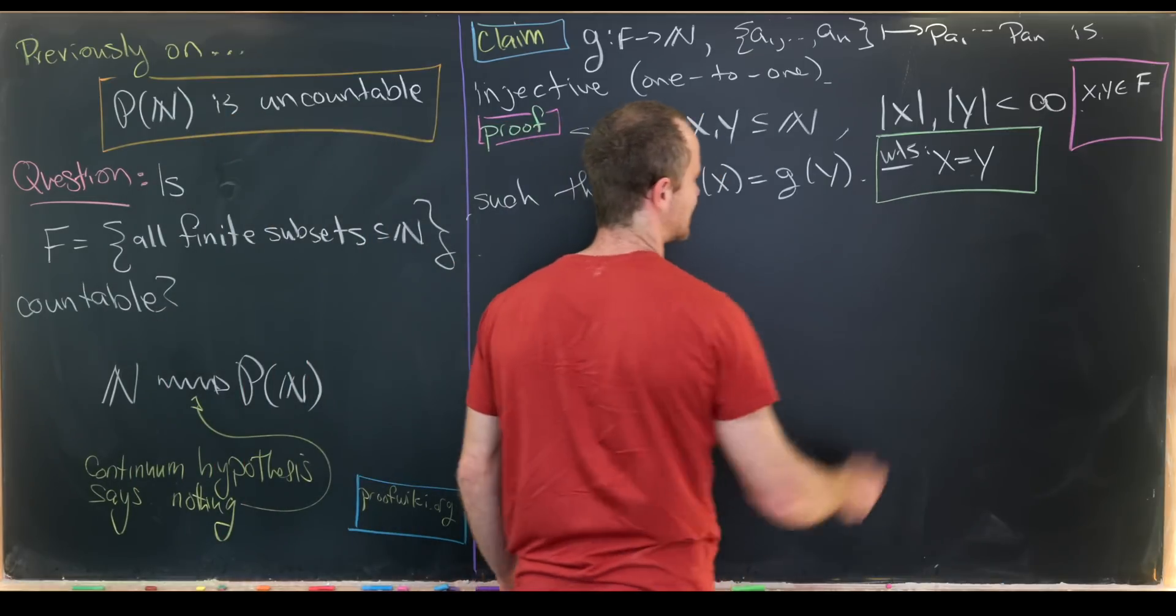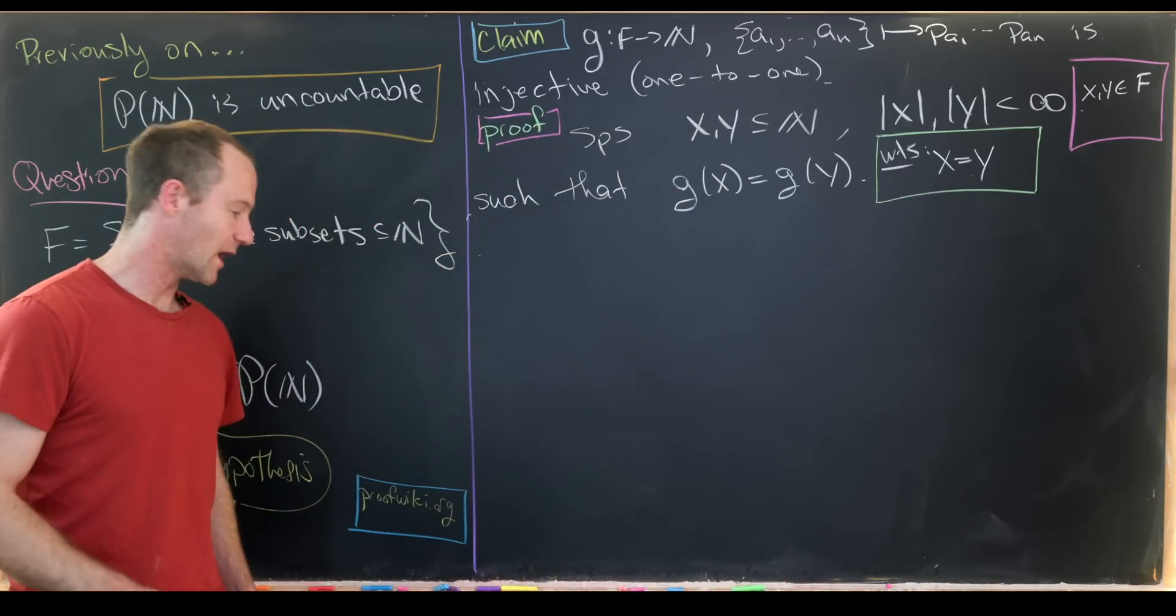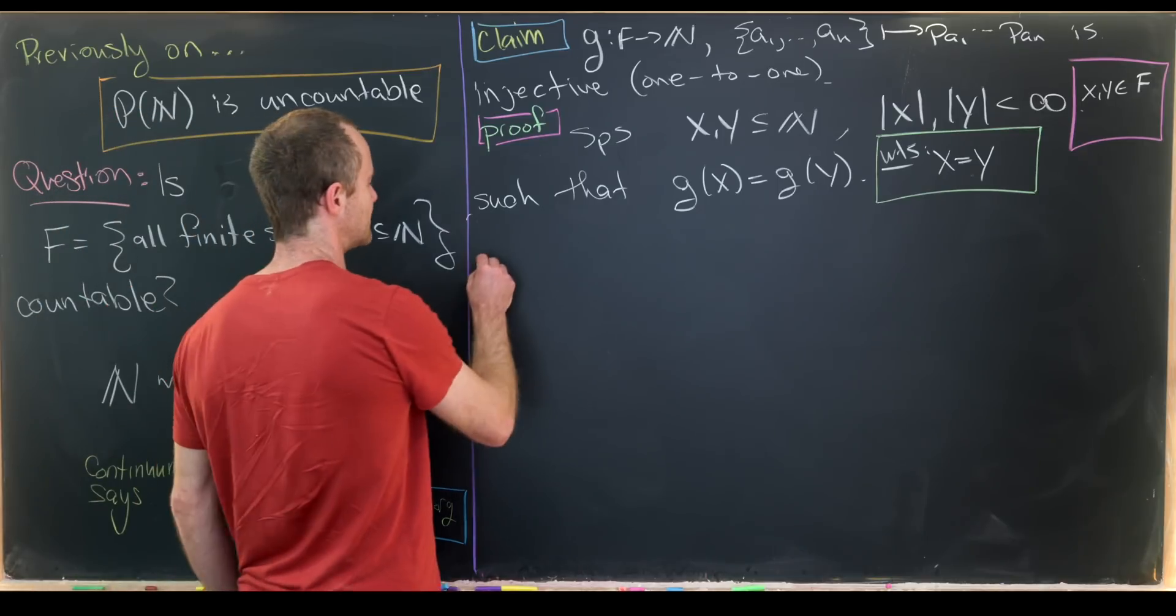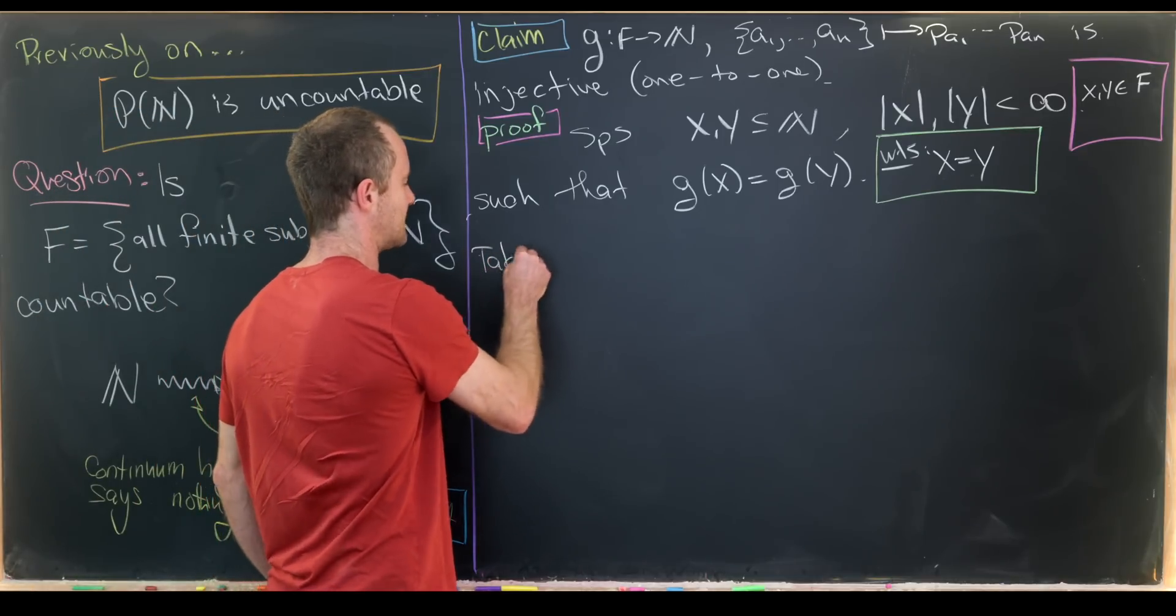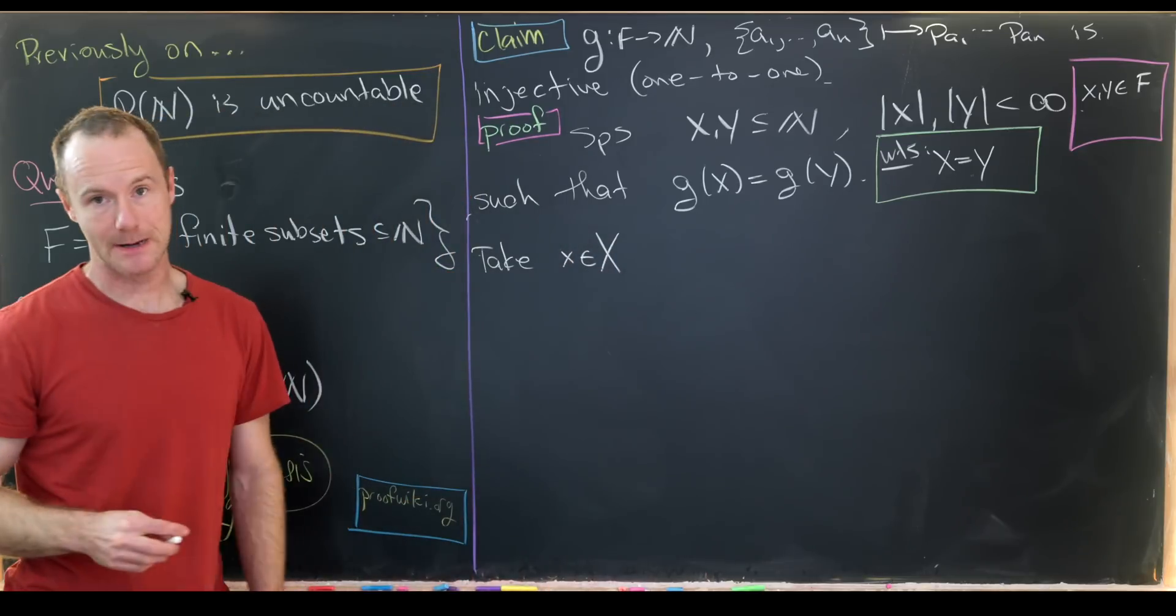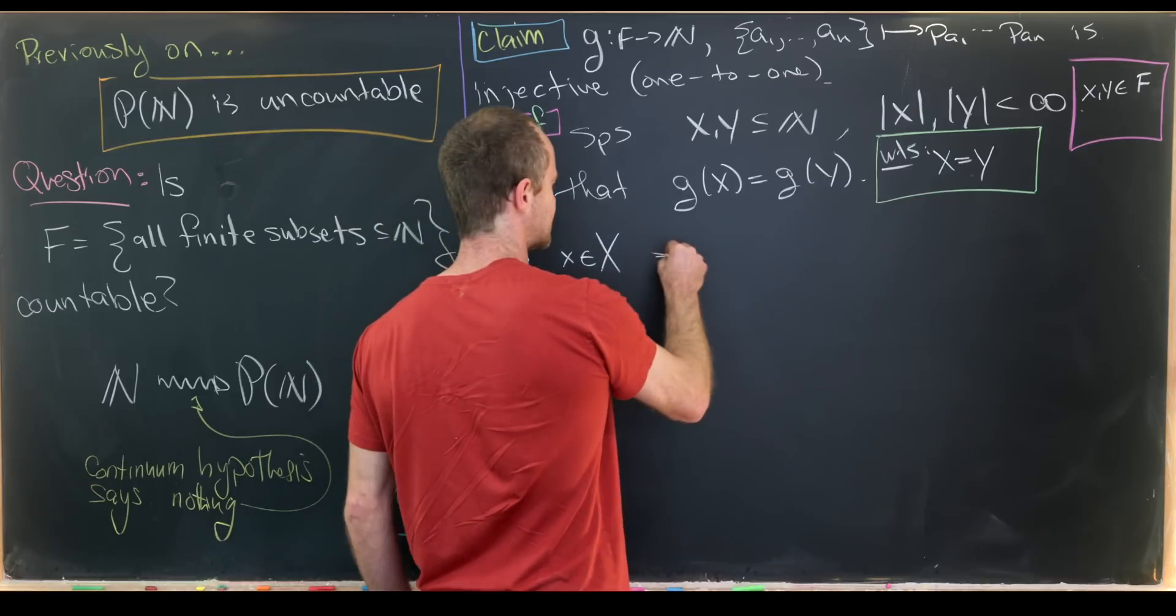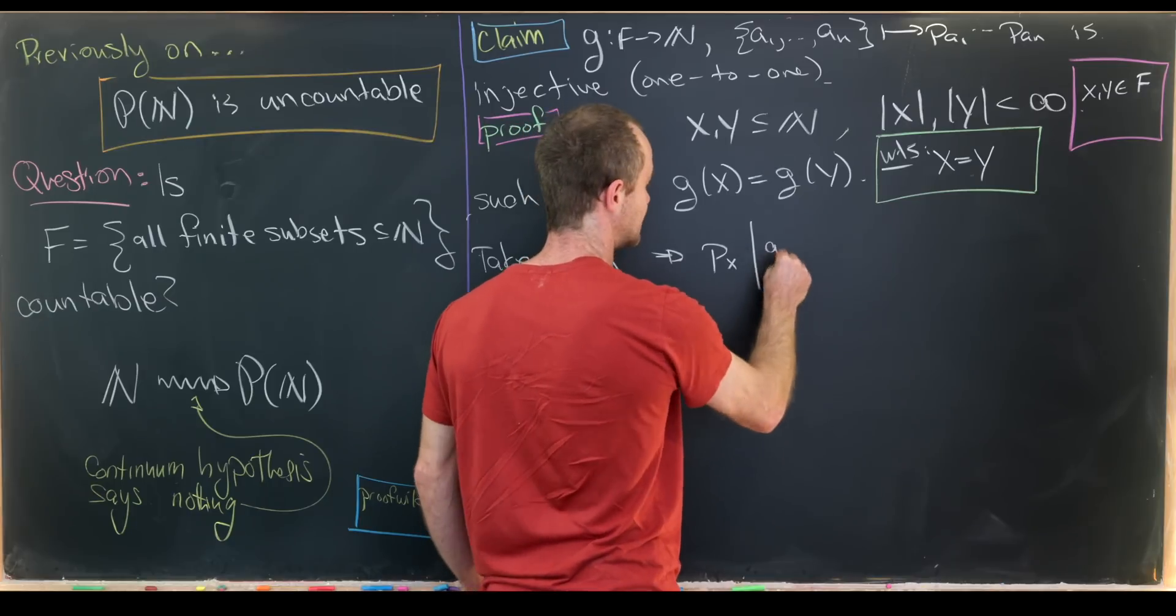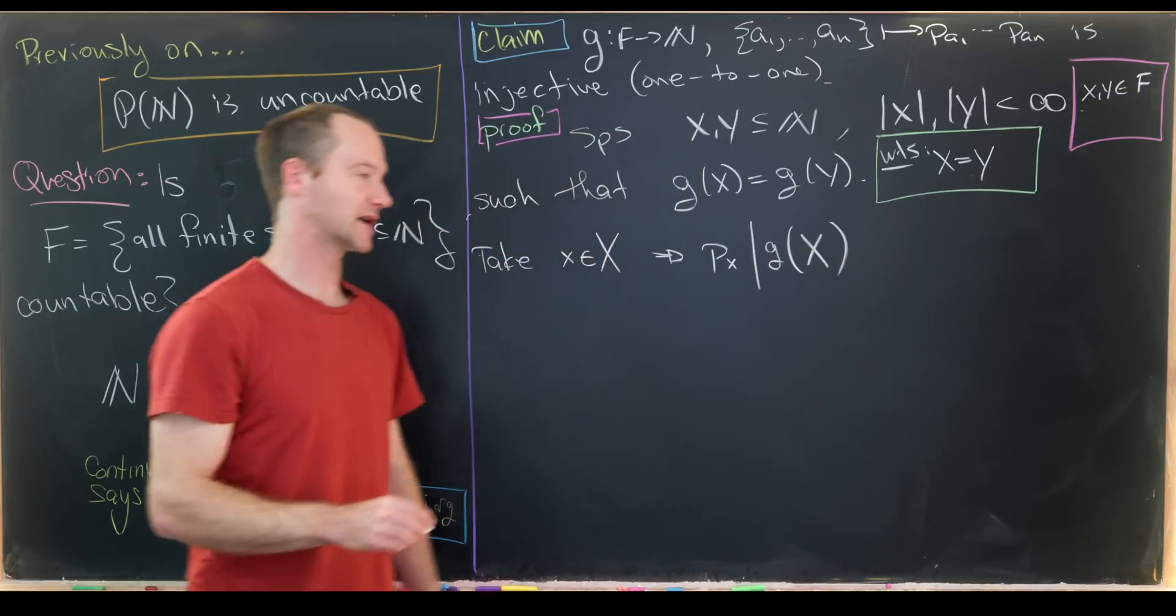This is technically the contrapositive of the definition of one-to-one, but the contrapositive and the statement are equivalent. So how do we show one set equals another? The classic way is by double set inclusion. Let's take some x ∈ X. That means P_x divides G(X).